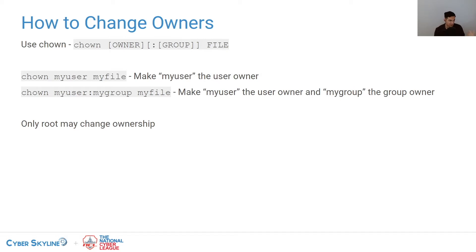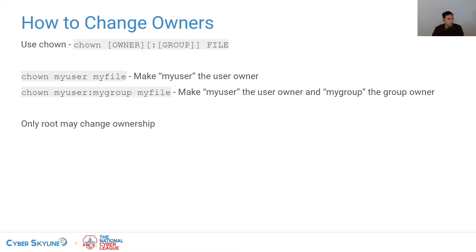Using chown myuser:mygroup changes both the user owner and the group owner at the same time. If the user already owns the file, it has no effect on ownership. One important thing to note: only root may change ownership of a file. Even if you are the owner of a file, you can't give it to someone else — root has to do that. A quick Google search is always your best bet if you don't know the exact command to use in Linux.